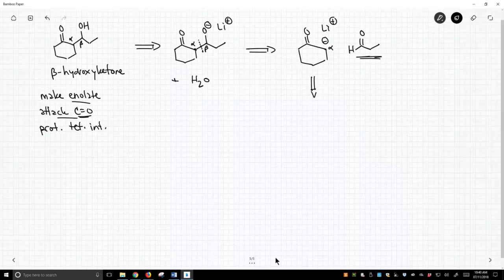Then how did we make this enolate? Well, enolates come from ketones, and for the aldol reaction we need to use LDA.